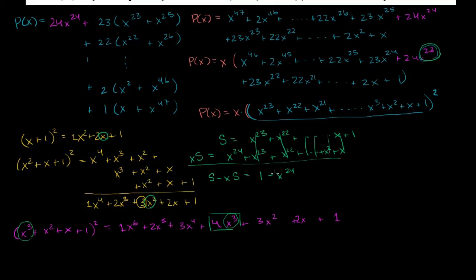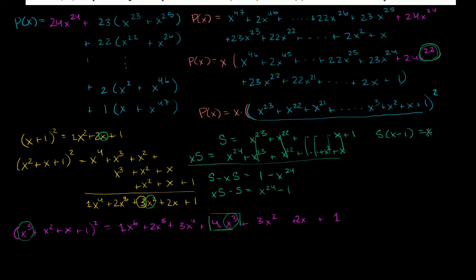Let's multiply both sides by negative 1, which puts it in a slightly easier form. So xs minus s equals x to the 24th minus 1. We can factor out an s from the left-hand side, giving us s times x minus 1 equals x to the 24th minus 1.